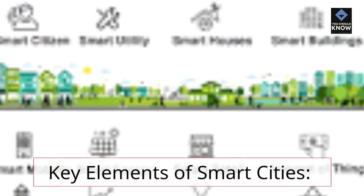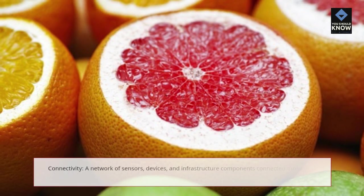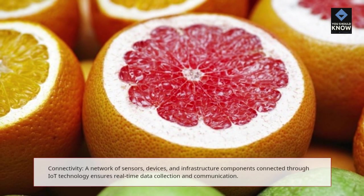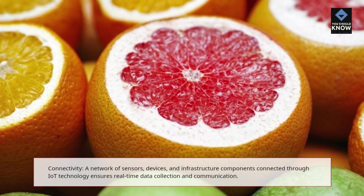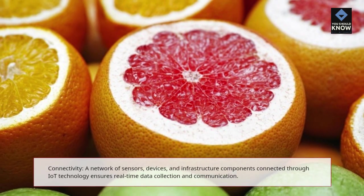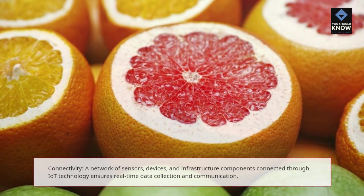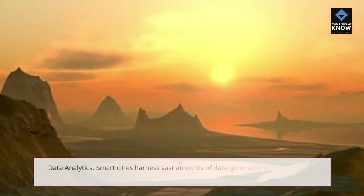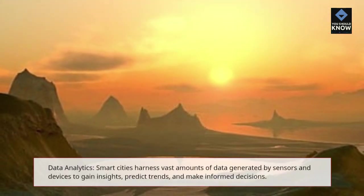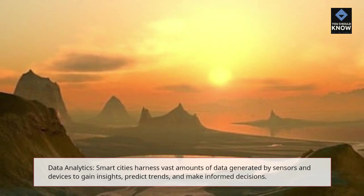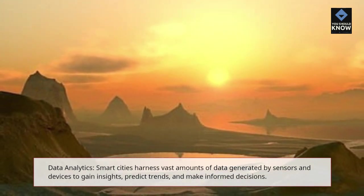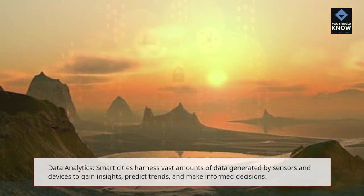Key elements of smart cities include Connectivity — a network of sensors, devices, and infrastructure components connected through IoT technology ensures real-time data collection and communication. Data analytics allows smart cities to harness vast amounts of data generated by sensors and devices to gain insights, predict trends, and make informed decisions.